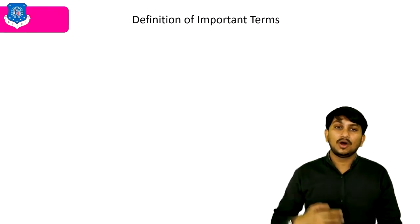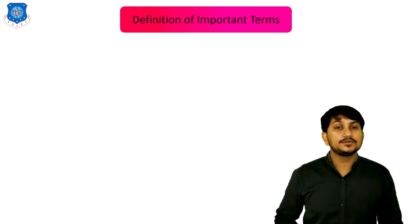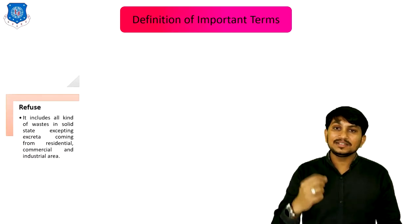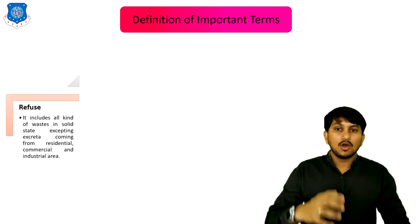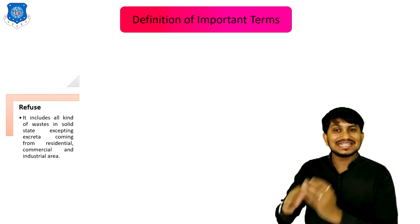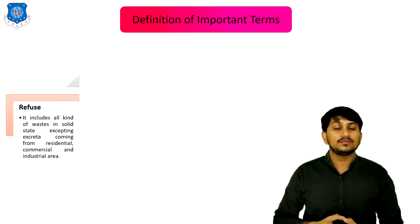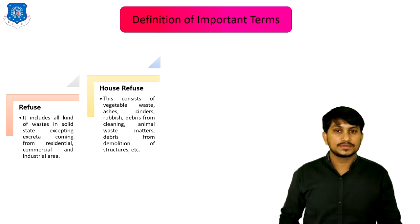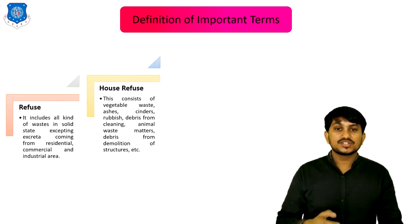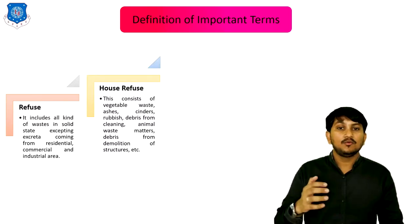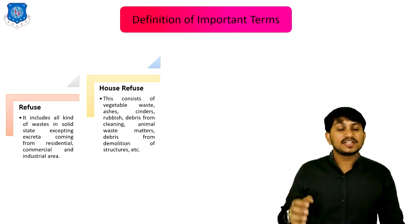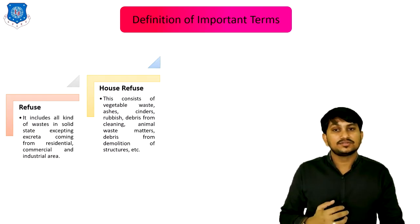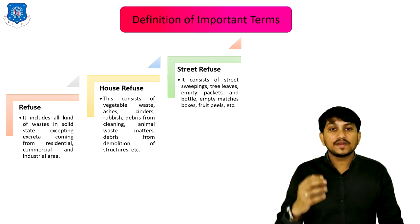Now let's discuss various definitions of important terms related to solid waste. The first and main term is Refuse. It includes all kinds of waste in solid state, excepting extracts coming from residential, commercial and industrial areas. These are of three types. First is House Refuse, which consists of vegetable waste, ashes, cinders, rubbish, debris from cleaning, animal waste matter, debris from demolition of various structures, etc. Second is Street Refuse, which includes all street sweepings, trail links, empty packets, hand bottles, empty match boxes, fruit peels, etc.